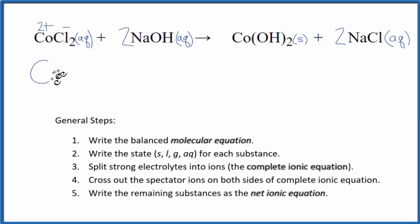So we have Co2 plus, and I won't write aqueous each time. Let's do that at the end. Plus the chloride ion, Cl minus. But the subscript here, that means we have two of those. Two chloride ions.